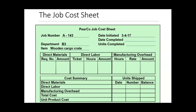We have what's called a job cost sheet. This job is entitled A-143. We're going to focus on the amount of costs assigned to job A-143 — the material costs, the labor costs, as well as the manufacturing overhead costs.